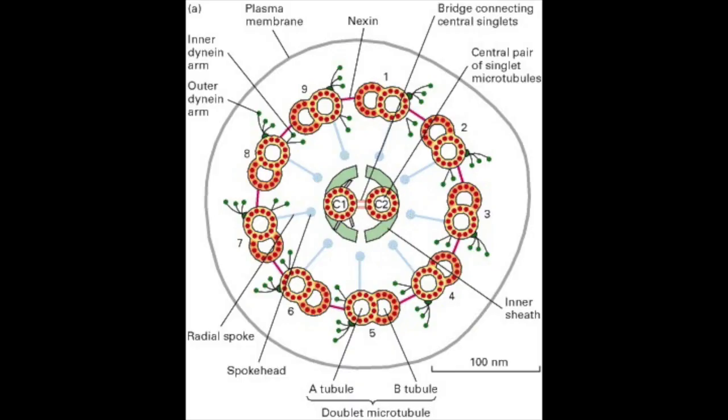How exactly the nine outer doublets' movements are coordinated is not well known, but it is believed to involve the central pair of microtubules because mutant flagella that lack a central pair are paralyzed.